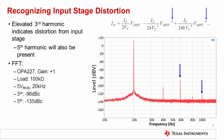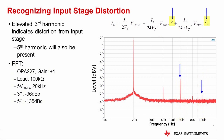We can identify input stage distortion by inspecting the output signal FFT. In this example, we took an FFT of the OPA227 output with a 20 kilohertz, 5-volt RMS output signal. As shown, the third and fifth harmonics are the dominant distortion sources. A large third harmonic is indicative of input stage distortion. This should make sense, as the first two distortion terms in the Taylor expansion are the third and fifth harmonics.